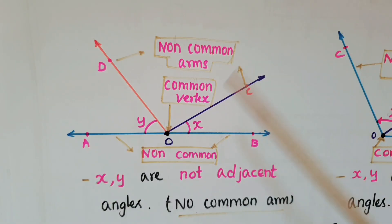If you observe this figure, O is the common vertex for these two angles X and Y, and OA and OB are on either side. But here there is no common arm for X and Y angles, so these two angles are not adjacent angles.